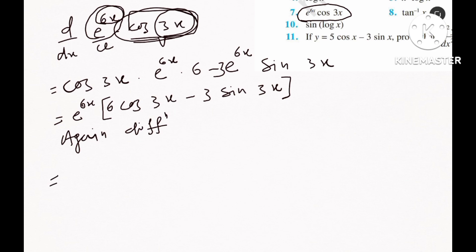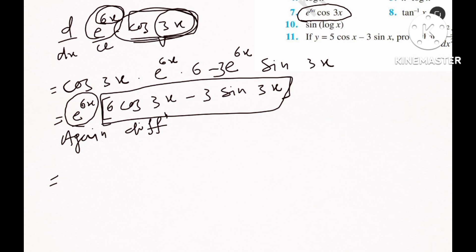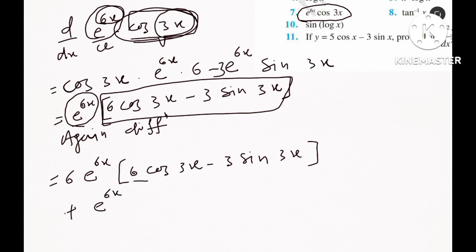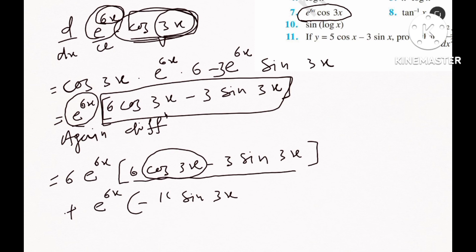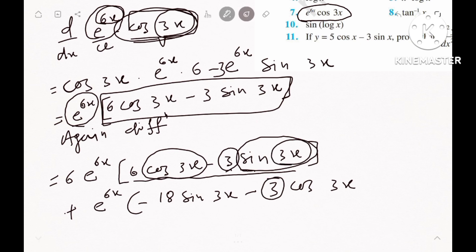Now we differentiate the first derivative expression again to get the second derivative. Taking e^(6x) common: derivative of e^(6x) is e^(6x) times 6, leaving the bracket expression as it is; plus e^(6x) as it is, times the derivative of the bracket. The constant 6 multiplied gives 18; and the 3 multiplied by 3 gives 9. So the final second derivative answer for question 7 is obtained.